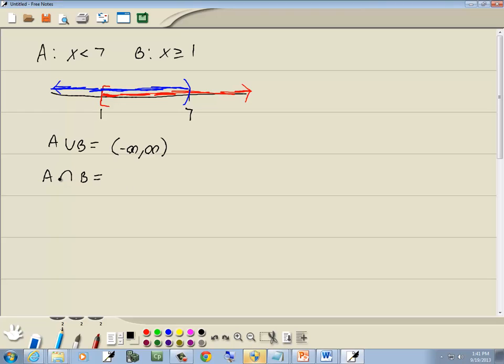Now, the second thing we want to find is the intersection. This is AND in mathematics. Graph-wise, it's where they're both shaded. Well, they're both shaded from 1 to 7. Now, there's a bracket on the 1, so bracket on the 1. There's a parenthesis on the 7, so parenthesis on the 7. Whatever bracket or parenthesis is up here is the same one to just carry straight down. And those will be your answers. Thank you.